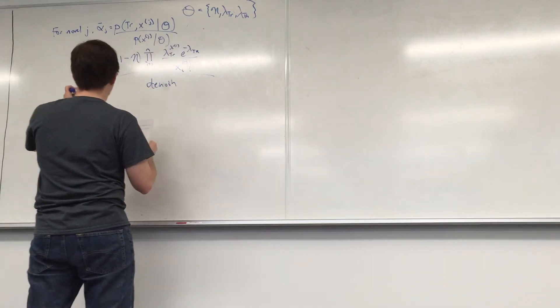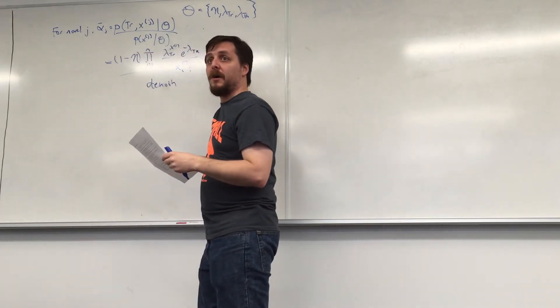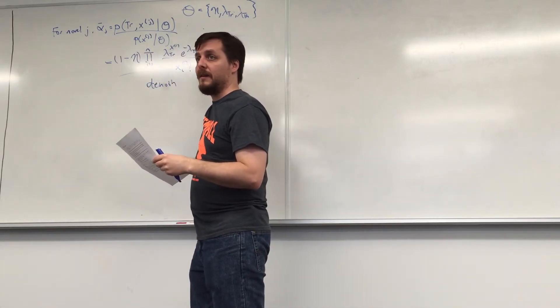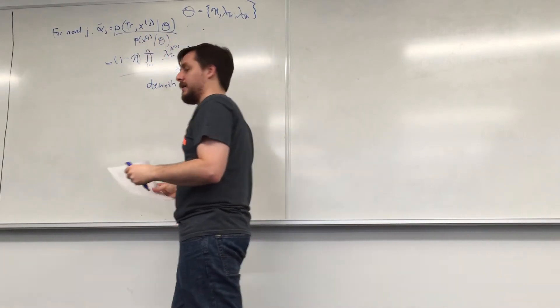And then you just have, so this is for a given, so this is essentially the probability part of the EM, where I'm computing for every given novel what's the probability of it being partially Trollope and partially Thackeray.